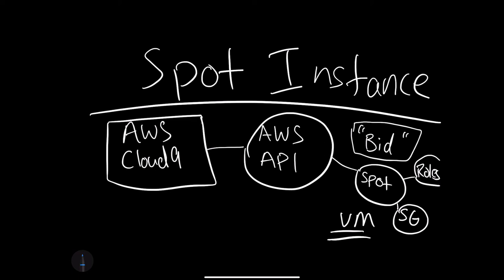Let's talk through this Spot instance walkthrough architecture. In this first example, we have AWS Cloud9, and this is really the docking station where I'd like to do commands, launch other instances, and do interactive things with the AWS platform.